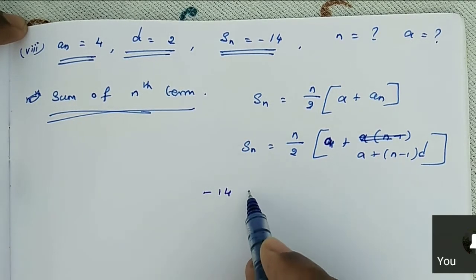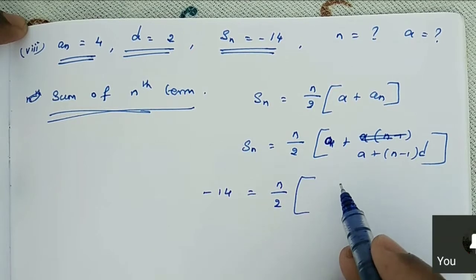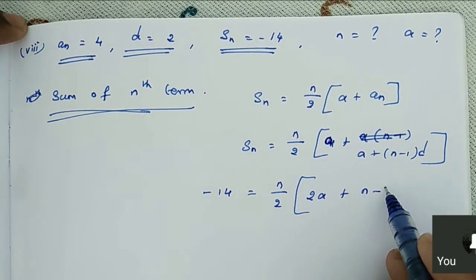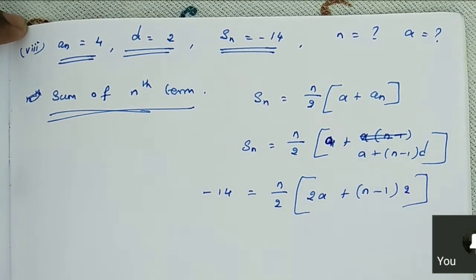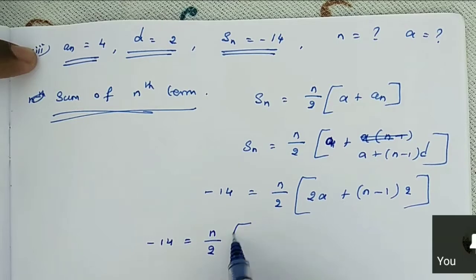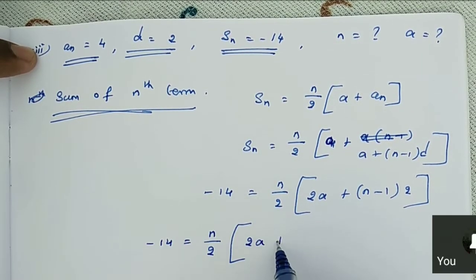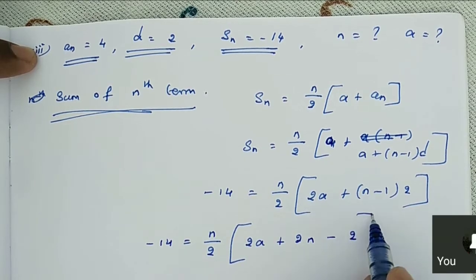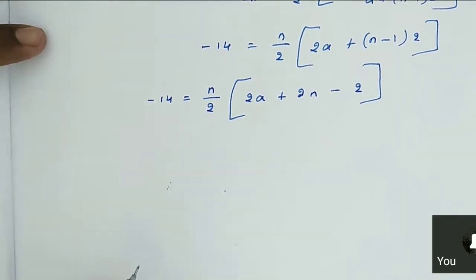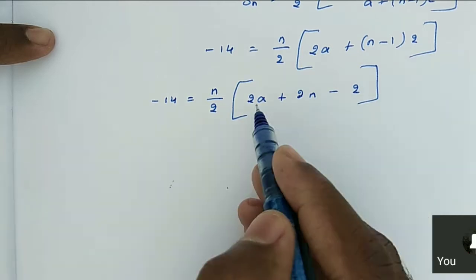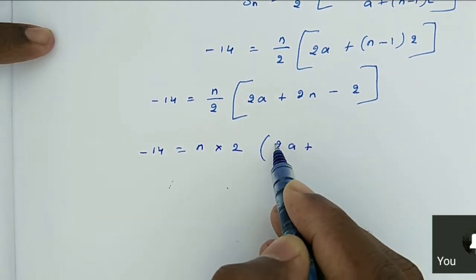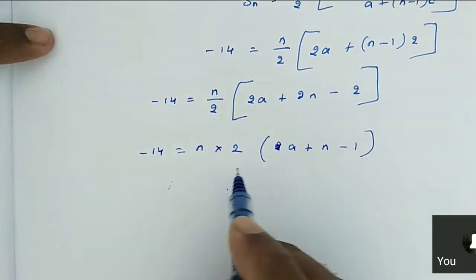S_N that is minus 14 is equal to N by 2 times 2A plus N minus 1, with D value 2. So minus 14 is equal to N by 2. We can simplify: 2A plus 2N minus 2, because the 2 is common — just multiply it inside. Then 2 is common in all the terms, so minus 14 is equal to N times A plus N minus 1, divided by 2. The 2's cancel.